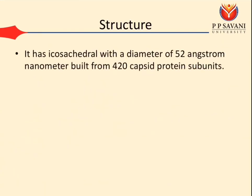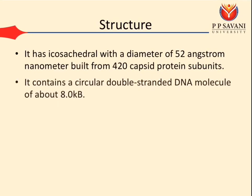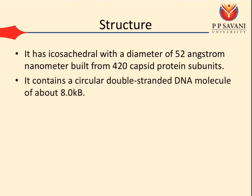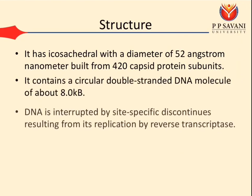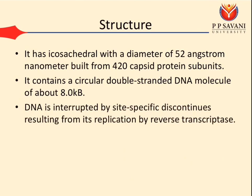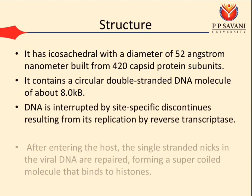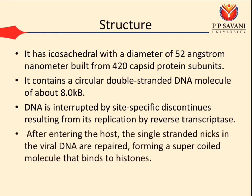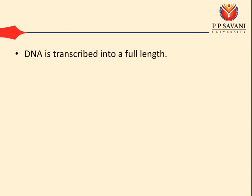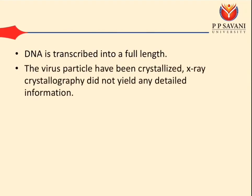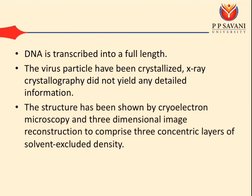Structurally, CaMV has an icosahedral particle with a diameter of 52 nanometers built from 420 capsid protein subunits. It contains a circular double-stranded DNA molecule of about 8.0 kb. The DNA is interrupted by site-specific discontinuities resulting from replication by reverse transcriptase. After entering the host, the single-stranded nicks in the viral DNA are repaired, forming a supercoiled molecule that binds to histones. The structure has been shown by cryo-electron microscopy and 3D image reconstruction to comprise three concentric layers of solvent-excluded density.